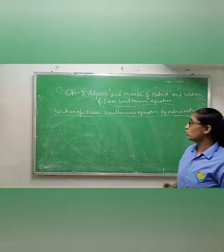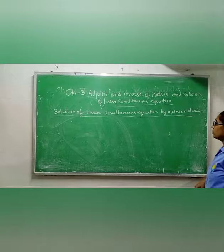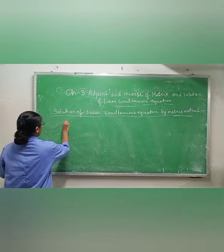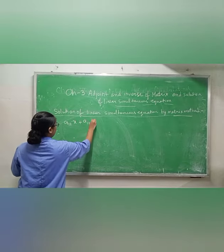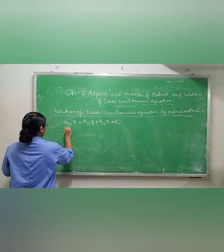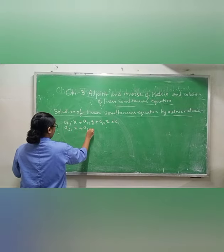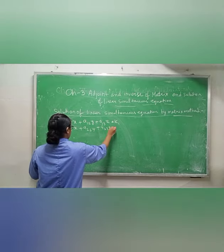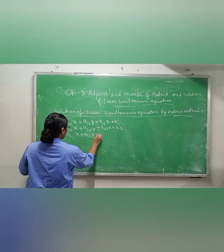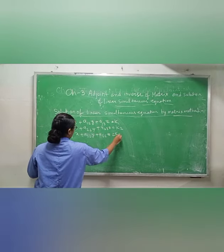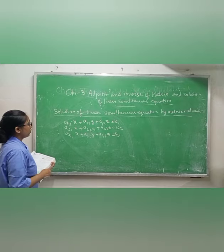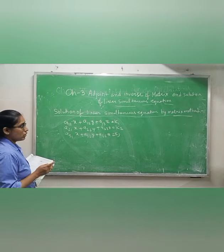Today I am going to tell you the solution of linear simultaneous equations by the matrix method. Suppose that you have three equations: a11x + a12y + a13z = k1, a21x + a22y + a23z = k2, and a31x + a32y + a33z = k3. If you have this type of system, how will you find the solution of the linear simultaneous equation using the matrix method?